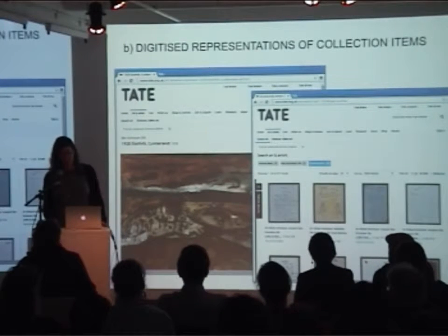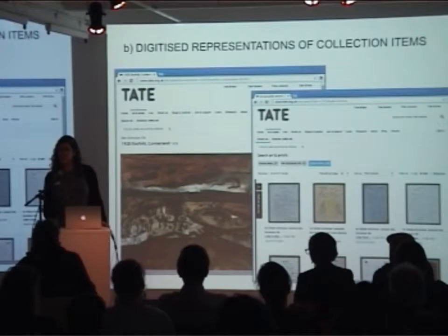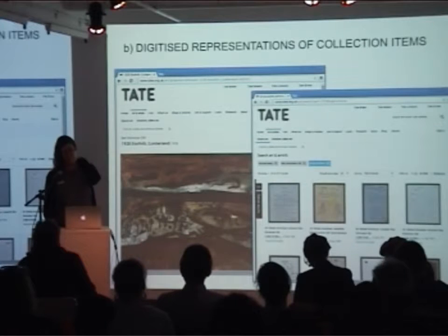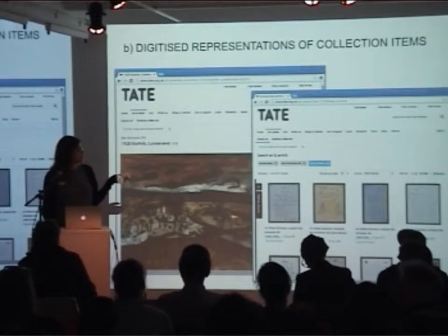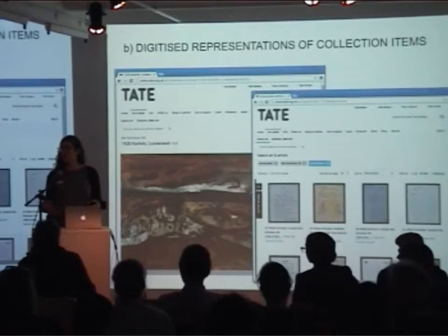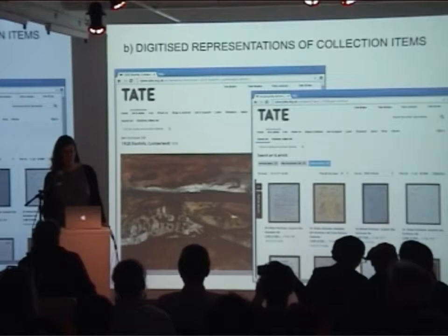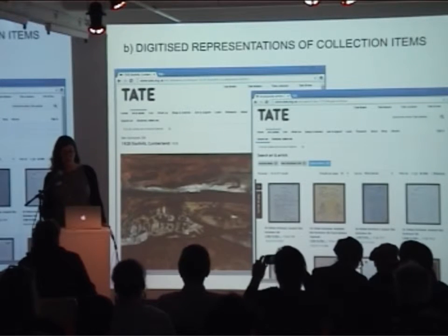We also have a large number of digitised copies of collection items. All of our art collection is accessible on the website, and there was also a recent project to digitise a large portion of the Tate archive collection and make that accessible online through the art and artist section of the website.